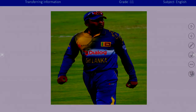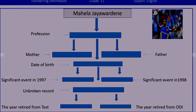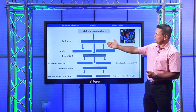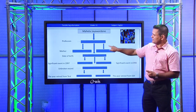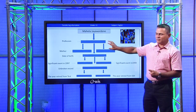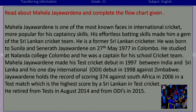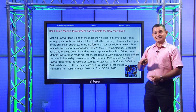Do you know this person? When you do reading questions, first read the questions or the task that you have to do. For example, here you have to fill these gaps. For information, you have to take from somewhere. It says: read about Mahela Jayawardena and complete the flowchart given. Read the flowchart earlier and keep that in your mind. Then when you read the text, you can understand what information you have to take.